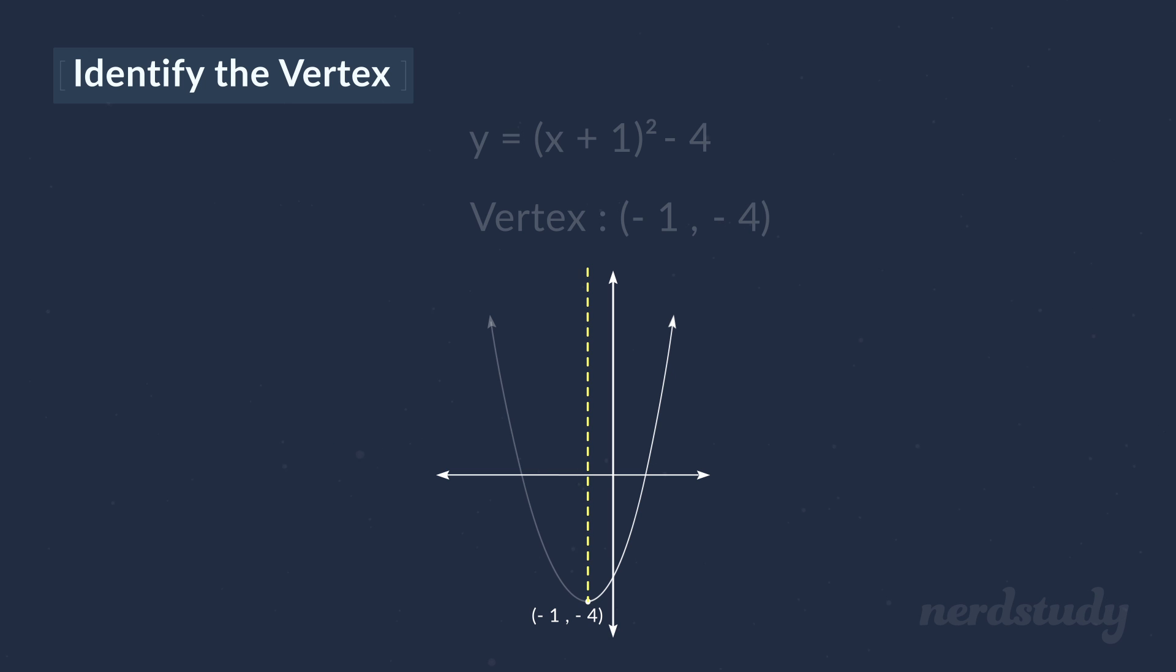This imaginary middle line, which is more properly known as the axis of symmetry or the line of symmetry, can be found by simply writing x equals h, where h refers to the horizontal translation of our quadratic equation. In this example of the quadratic equation, our h was minus 1. Thus, the line of symmetry is x equals minus 1 for this parabola. It's as simple as that.